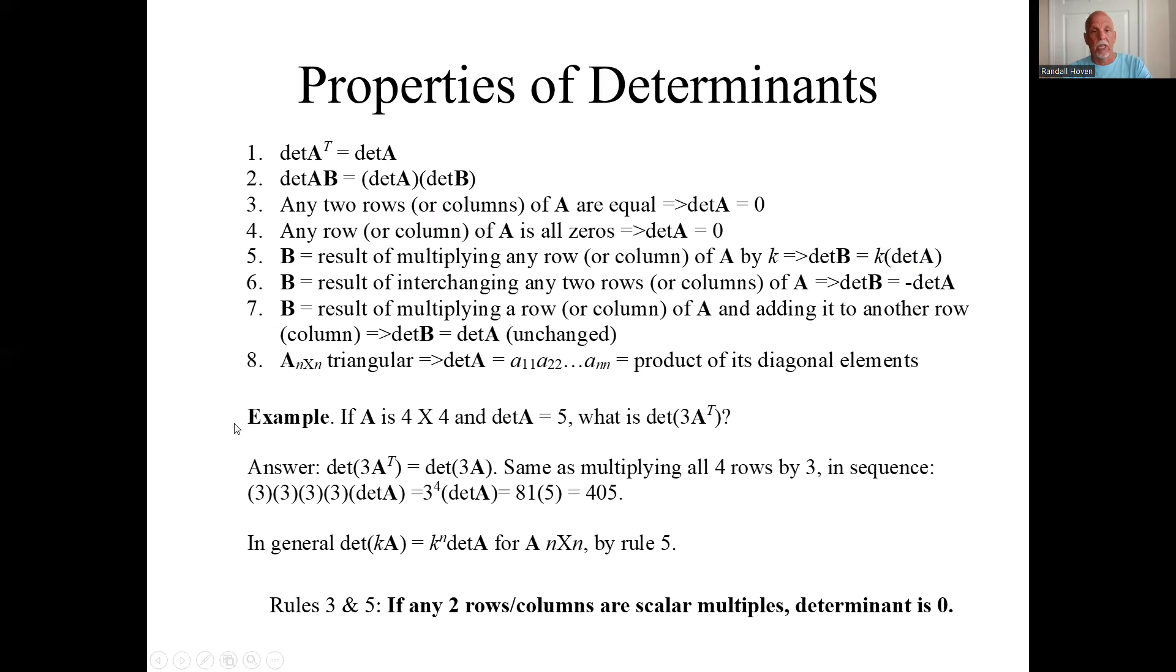Let's look at the implications of that down here. What if you multiply the whole determinant of the whole matrix by a scalar? Then it's like multiplying each of its rows by that same scalar. So you would need to multiply, if it's n by n, you need to multiply by n scalars.